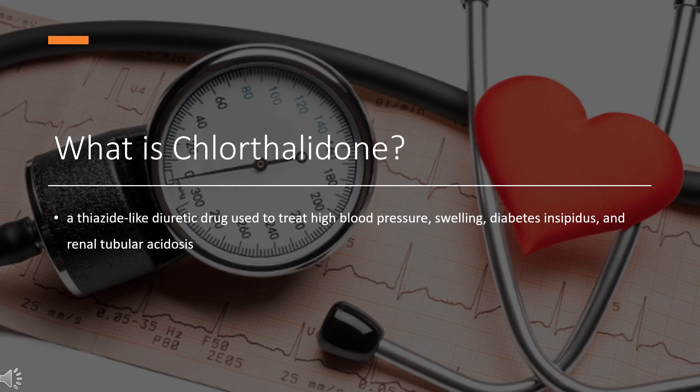Chlorthalidone is a thiazide-like diuretic drug used to treat high blood pressure, swelling, diabetes insipidus, and renal tubular acidosis. Because Chlorthalidone is reliably effective in most patients with high blood pressure, it is considered a preferred initial treatment.